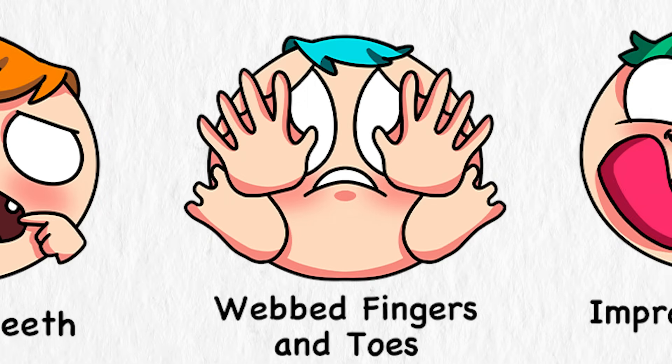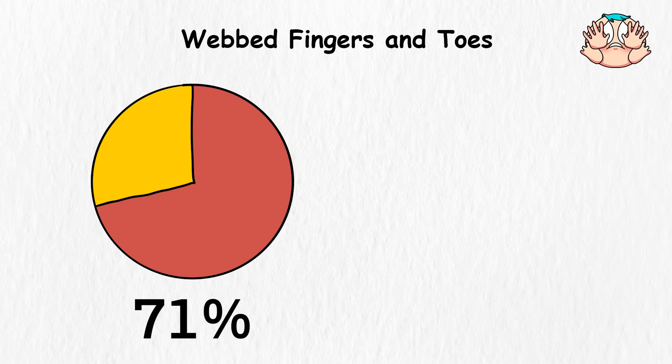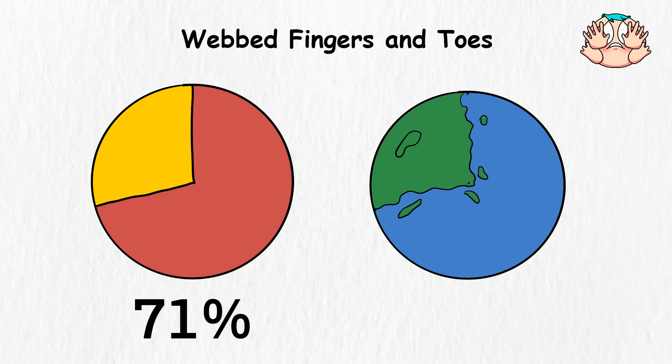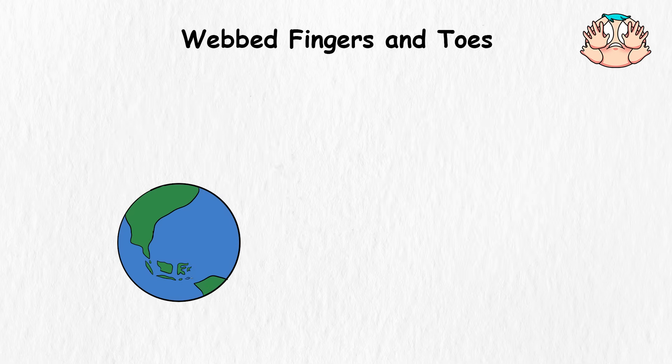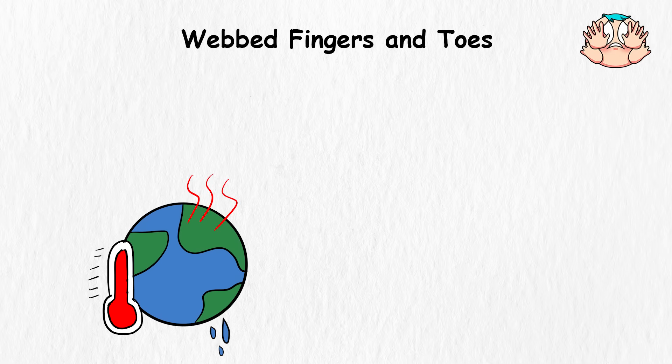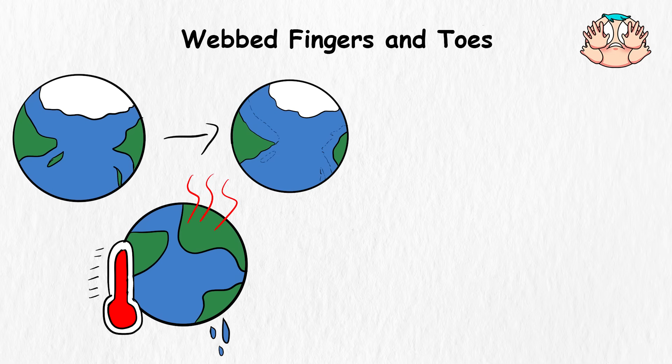Webbed fingers and toes. Currently, about 71% of the entire Earth's surface is completely covered by water. Now, picture Earth in about 1,000 years, when climate change has succeeded in completely melting the ice caps and there's water everywhere.